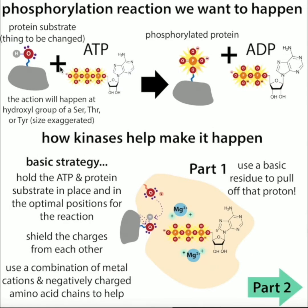Let's talk about how a kinase helps with this reaction. Enzymes stabilize the transition state, and here the transition state involves a negatively charged, awkward bent ATP intermediate. Since you have this negatively charged thing, you want to hold it in place and stabilize it — and to do that, you can use positively charged things. Kinases often use metal cations for this. A cation is a positively charged ion, and kinases often use magnesium cations, which have a plus-two charge, to help hold the ATP group in place. Then you need to get that terminal — gamma — phosphate off.